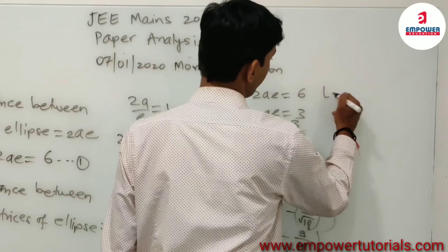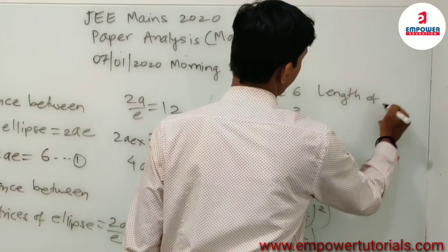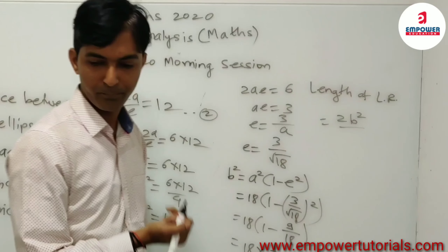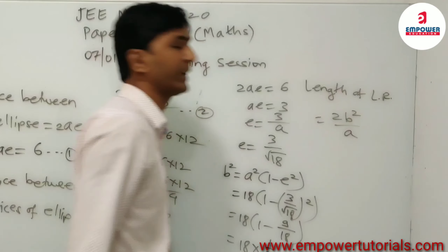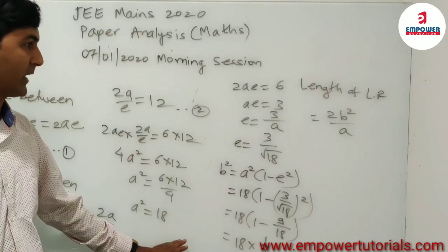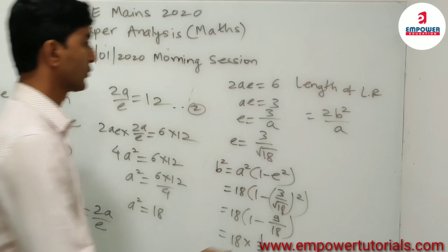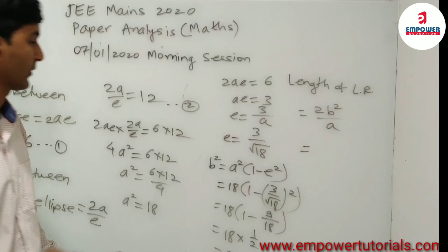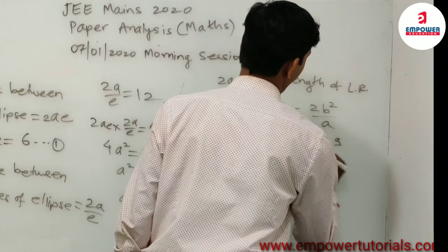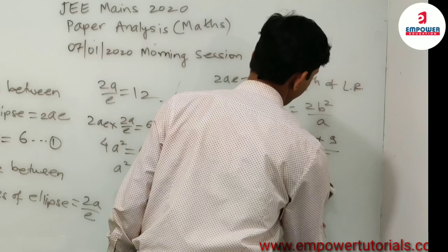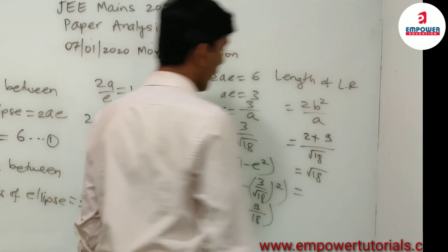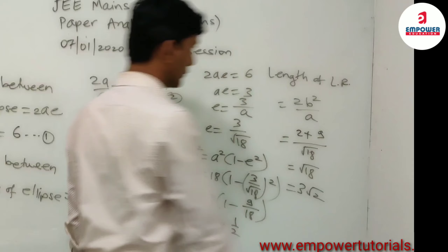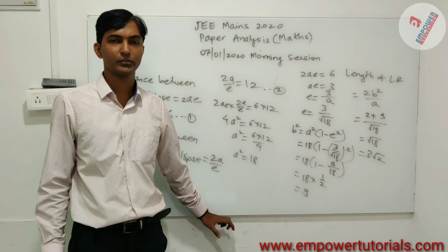Now the length of the latus rectum is given as 2B²/A. Substituting the values, we get 2 × 9 / √18 = 18/√18 = √18 = 3√2. So the length of the latus rectum is 3√2 units. This is the answer.